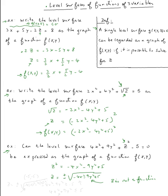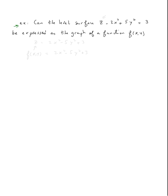Next example, same question: can the level surface z - 2x² + 5y² = 3 be expressed as the graph of a function? In this case there's no problem. Solving for z gives z = 2x² - 5y² + 3. So this is just f(x, y) = 2x² - 5y² + 3.